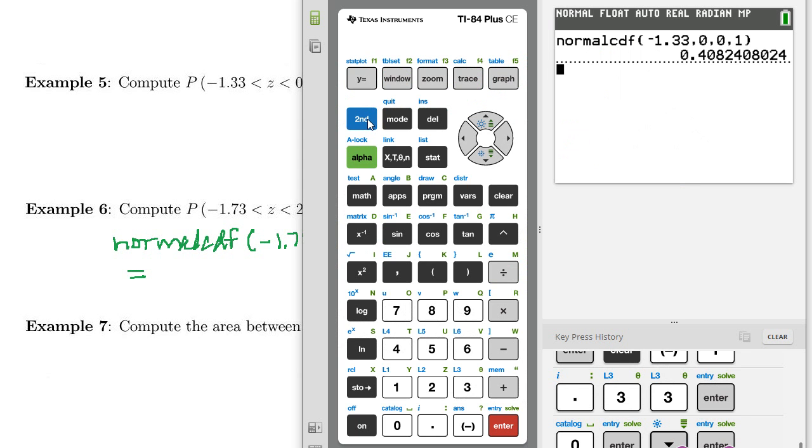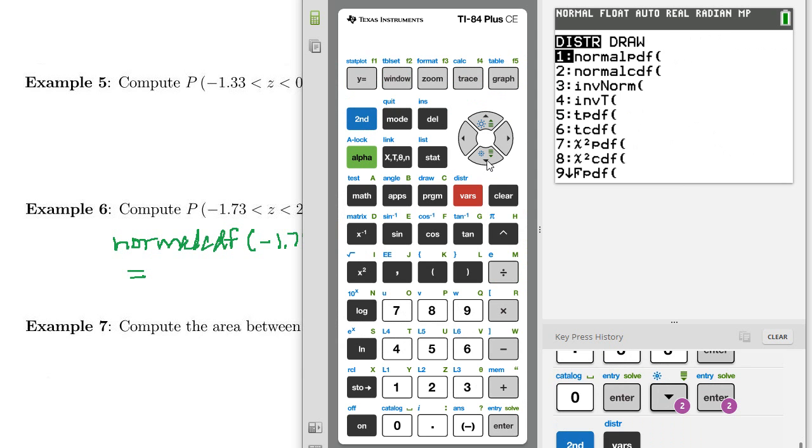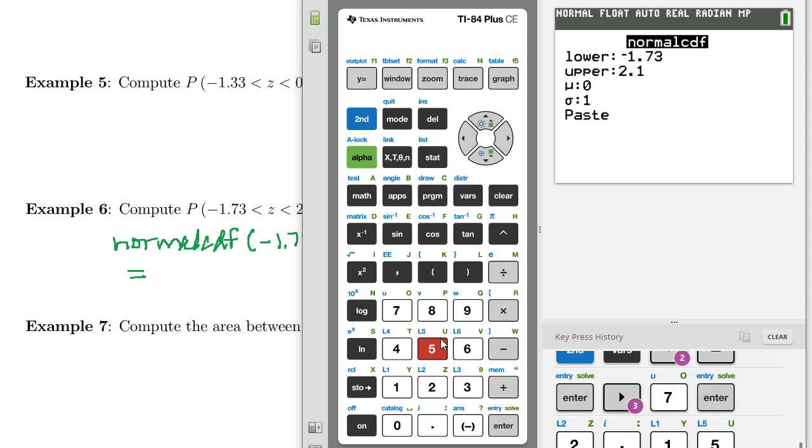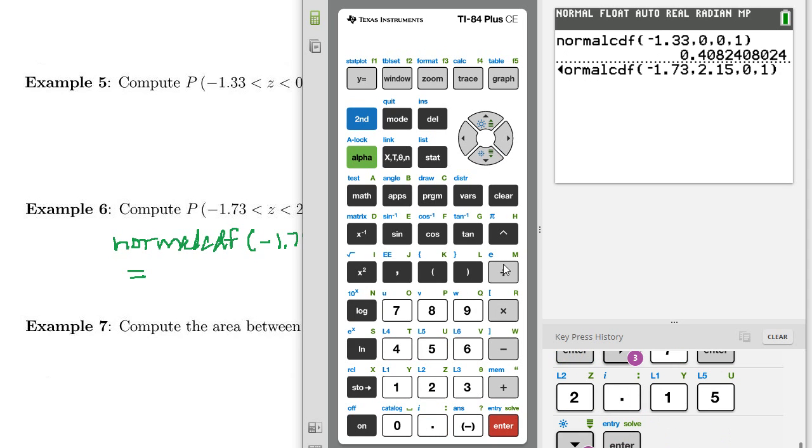So let's go ahead to second variables, normal CDF, and we want negative 1.73, and then our upper 2.15. We can paste that, 0.9424.